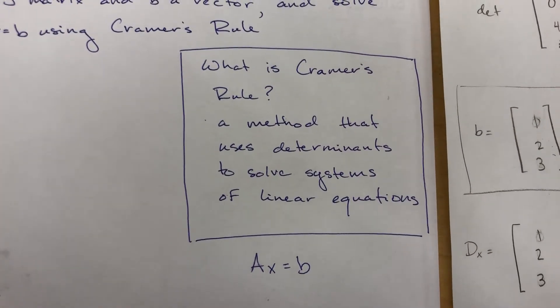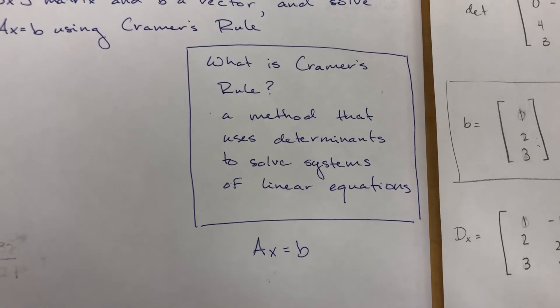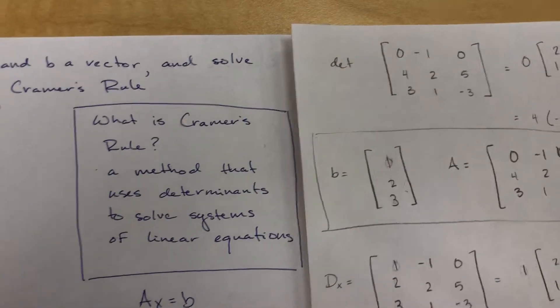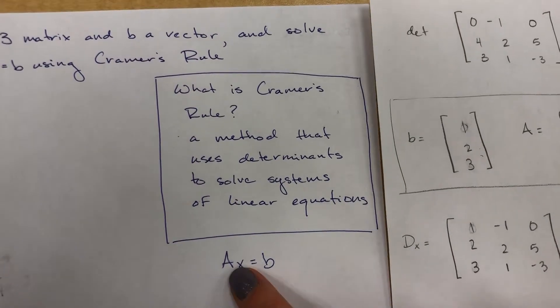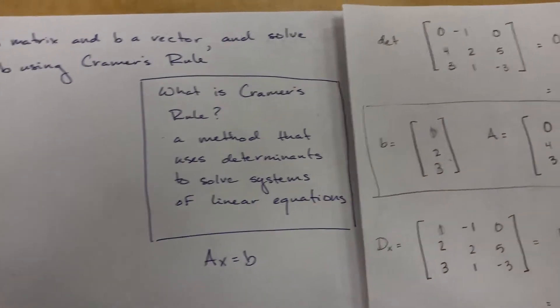So what is Cramer's rule? It's a method that uses determinants to solve systems of linear equations. For instance, if you want to find X using A and B, you can use Cramer's rule to find X.